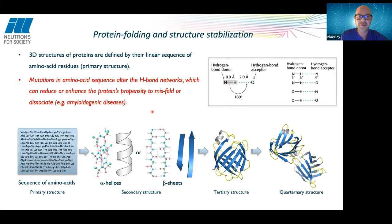Given that the amino acid sequence determines the three-dimensional structure and you have all these networks of hydrogen bonds between alpha helices and beta sheets, any mutations in the amino acid sequence alter those hydrogen bond networks. This can reduce or enhance the protein's propensity to misfold or dissociate, which is related to amyloidogenic diseases.